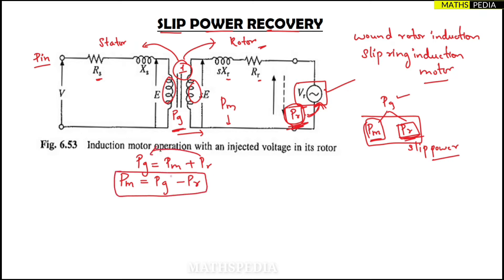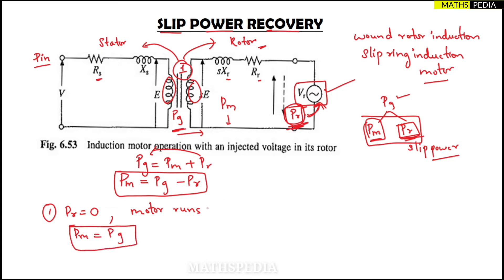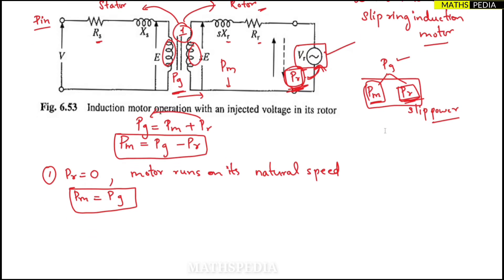Case 1: When PR equals zero — when slip power is zero — PM becomes equal to PG. Therefore the motor will run at its natural synchronous speed. This is the first case: natural speed operation.